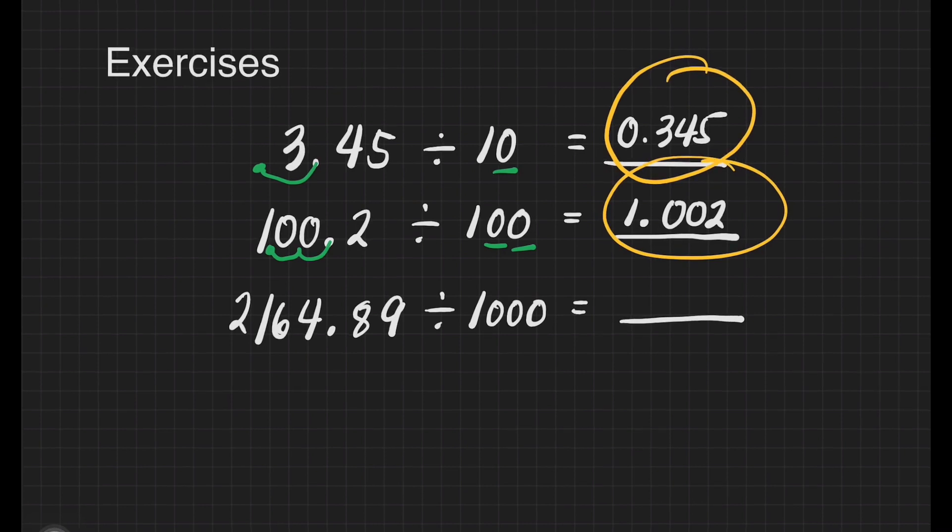For the last question, we have 2,164.89 divided by 1,000. We have three zeros in our divisor. It means we will move three decimal places in our dividend. That will give us 2.16489. And that is 2 and 16,489 hundred-thousandths.